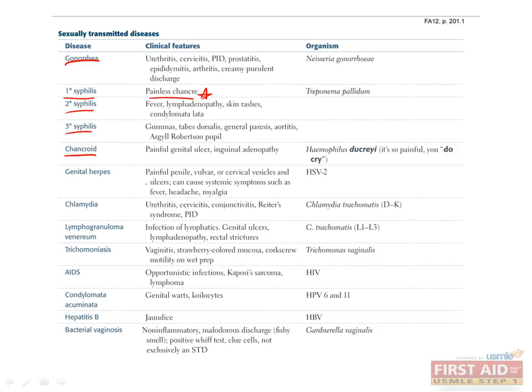Chancroid is caused by Haemophilus ducreyi and presents with a painful genital ulcer and inguinal adenopathy. You can remember that the ulcers are painful by remembering that with ducreyi, you do cry. Genital herpes is caused by HSV-2 and presents with painful penile, vulvar, or cervical vesicles. It can also cause systemic symptoms such as fever, headache, and myalgia.